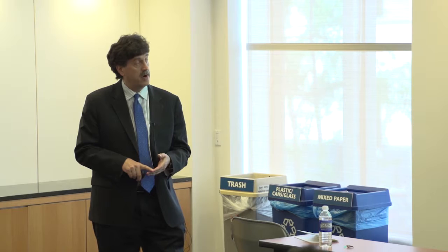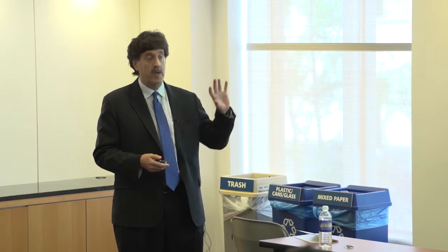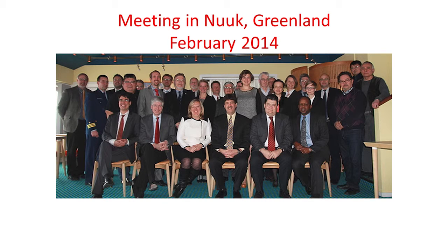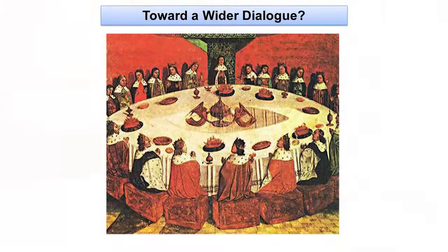We started by talking to the four other countries whose exclusive economic zones border this high seas pocket: Russia, Canada, Norway, and Denmark. As of about a year ago, we essentially came to agreement in principle that we would not allow our vessels to fish in this area until the conditions were met. We met most recently as a group in Nuuk, Greenland, and we are trying to formalize that understanding in the nature of a declaration. But none of us have jurisdiction except over our own vessels in this high seas area.